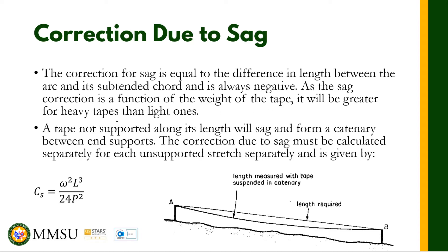As the sag correction is a function of the weight of the tape, it will be greater for heavy tapes than light ones — mas malaki yung sag ng mas mabigat na tape. You will see later on that the correction due to sag is a function of the weight of the tape in our formula. A tape not supported along its length with sag forms a catenary between end supports. The correction due to sag must be calculated separately for each unsupported stretch.